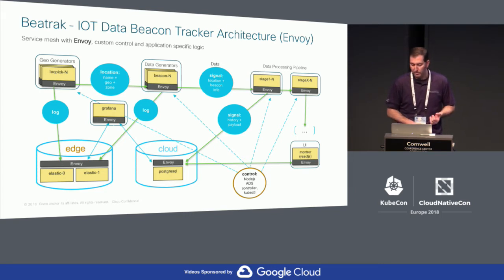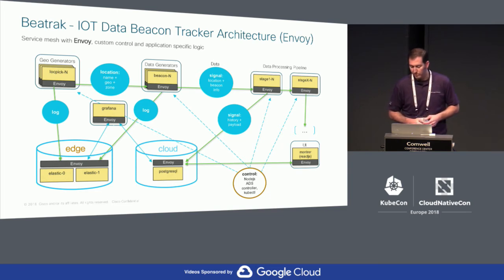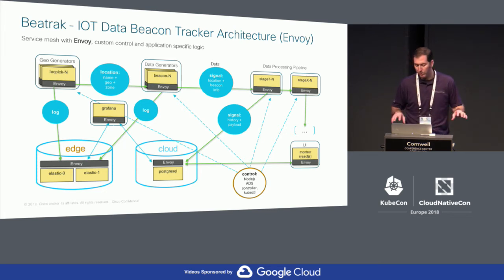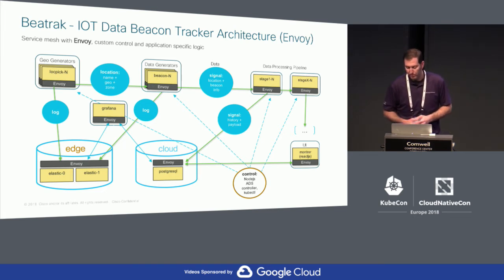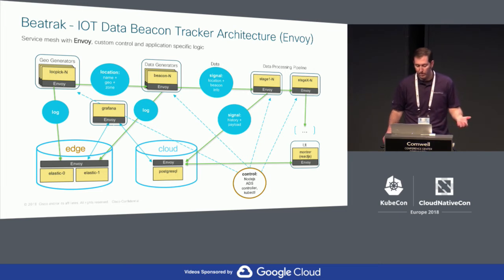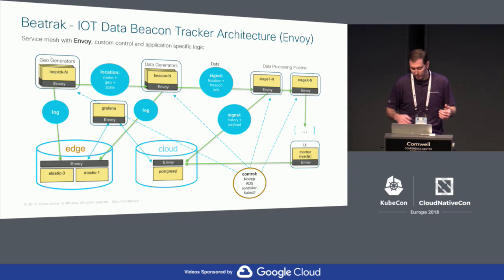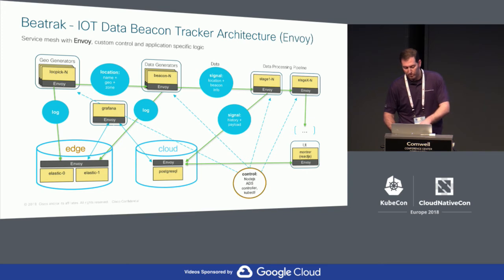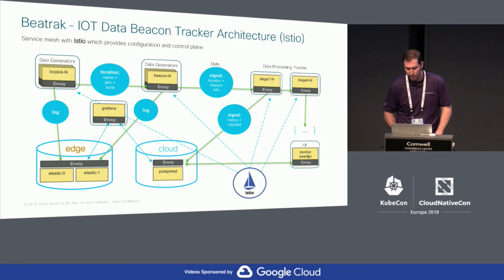We use ADS, Istio, or raw Envoy v1 static configs. To visualize what the application does, we have a UI called Montraire, which uses data from the Postgres database. We also have a Grafana dashboard containing graphs of beacon-generated data. The control bubble on the bottom represents the ADS scenario or the Istio scenario.